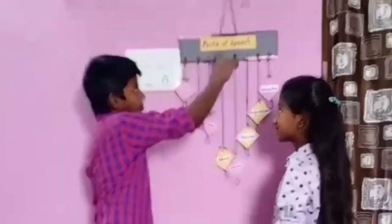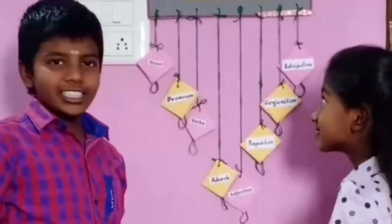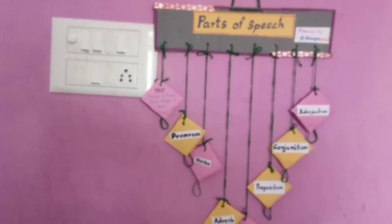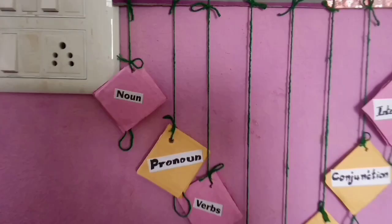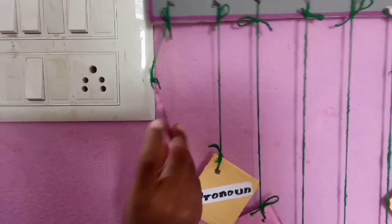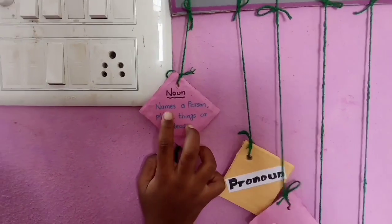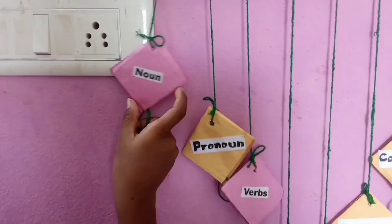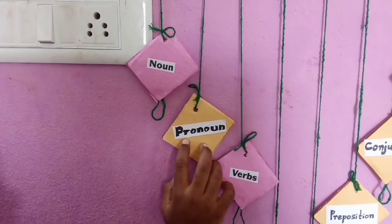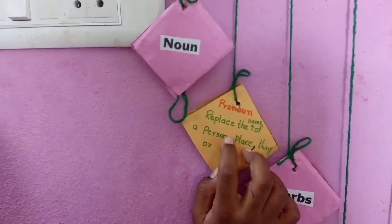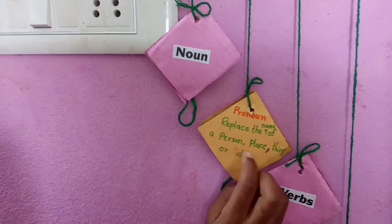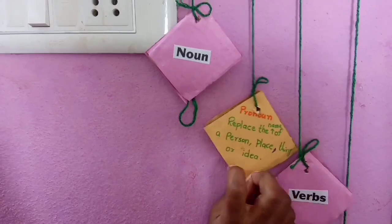Hi, James! Everyone, watch our speech. We did this. Now, name a person, place, things or ideas. Now, replace the name of a person, place, things or ideas.